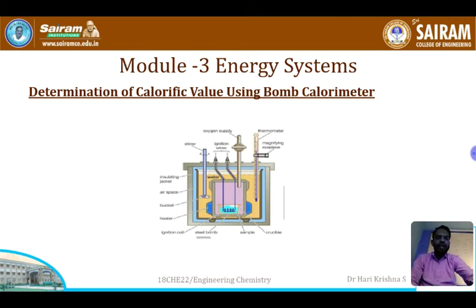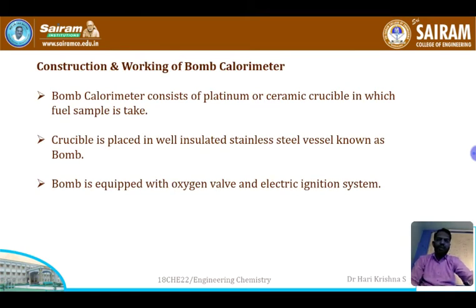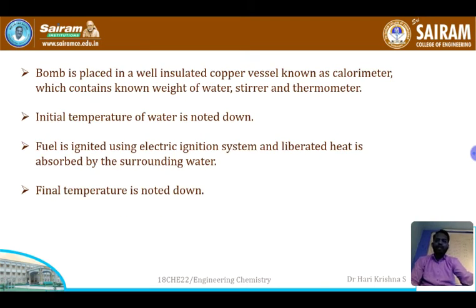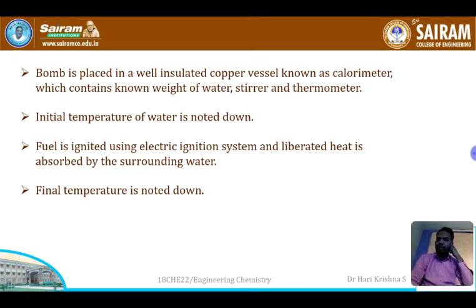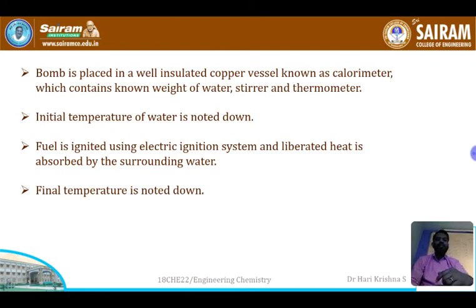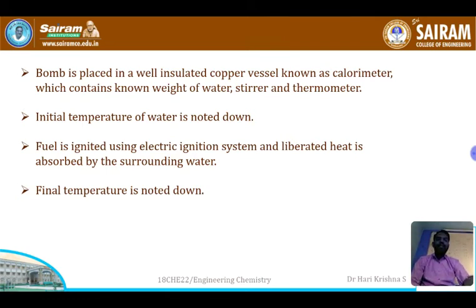Now let us see how the calorimeter works. First, a known weight of fuel is taken in the ceramic crucible. Before igniting the fuel, the initial temperature of the water is noted. The fuel is then ignited using the electric ignition system, and heat is liberated. This liberated heat is absorbed by the surrounding water present around the bomb, causing the temperature to rise slowly.